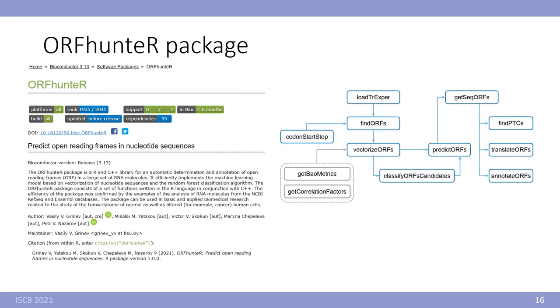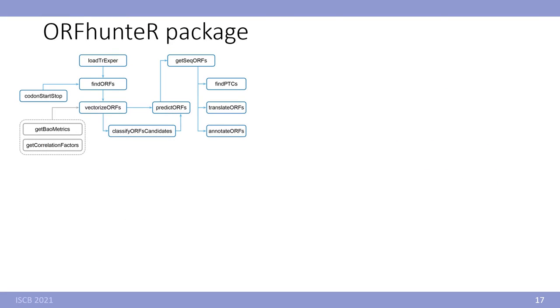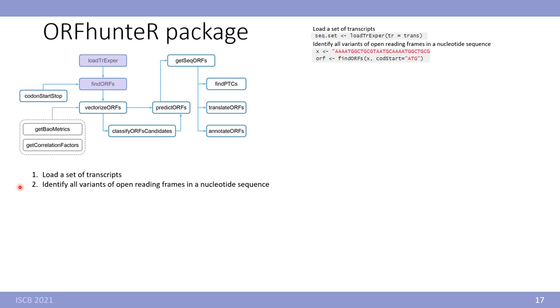All algorithms were implemented in ORFHunter R package published on Bioconductor. This is the scheme of our package. Let's see in details. The pipeline we propose started with loading a set of transcripts. Then identification of all possible ORF candidates. Next step is vectorization. Here we developed two public functions to get CPF model functions and correlation factors on C++ code to speed up the algorithm.